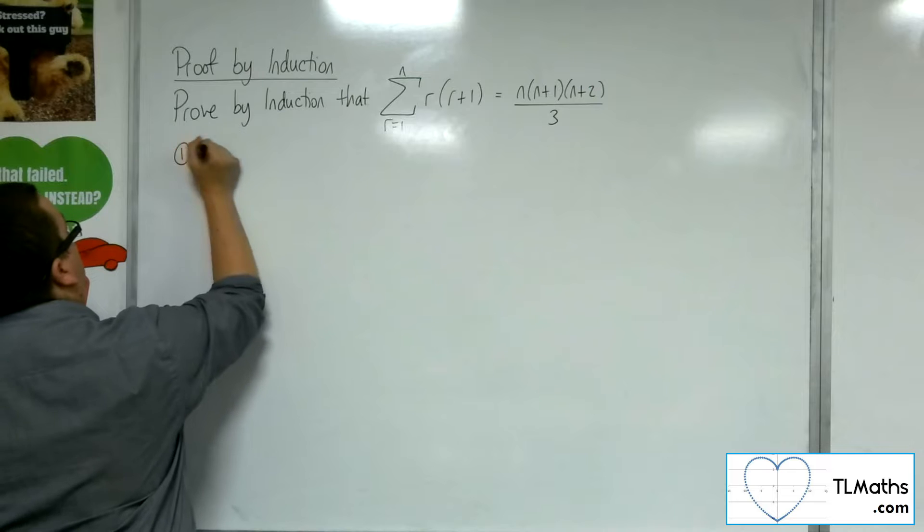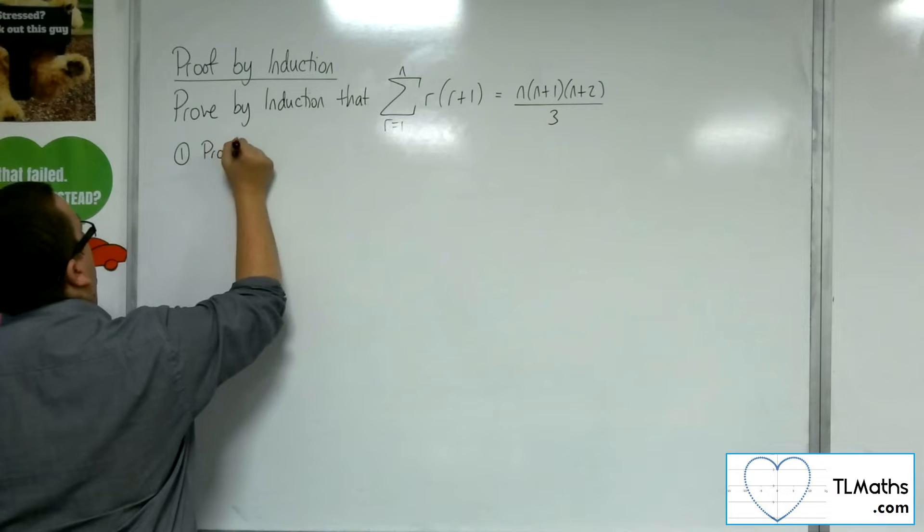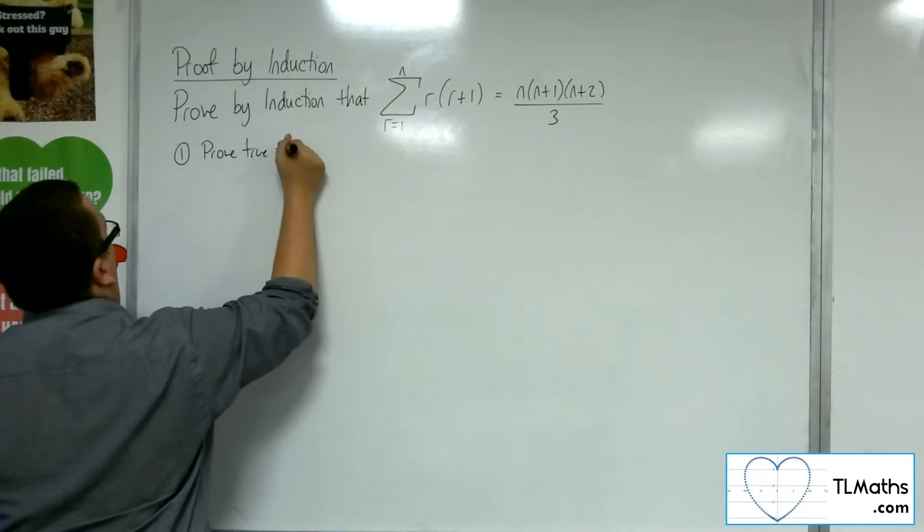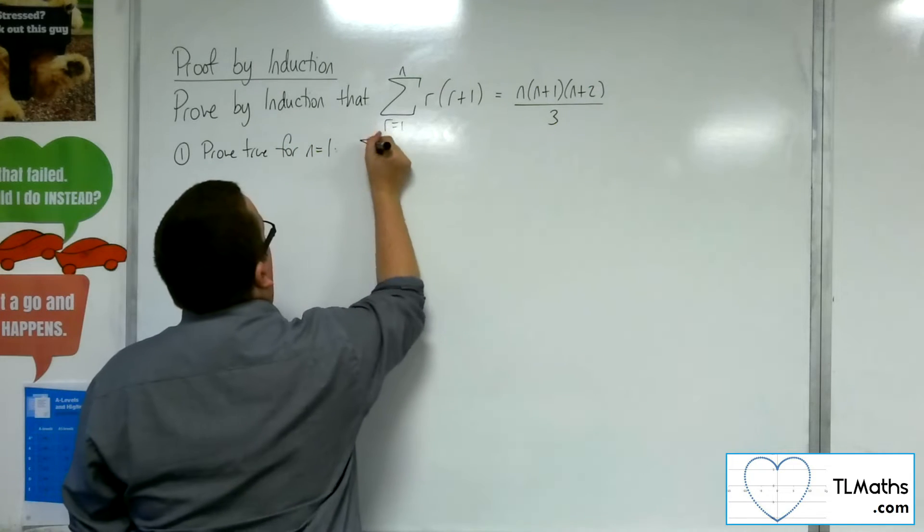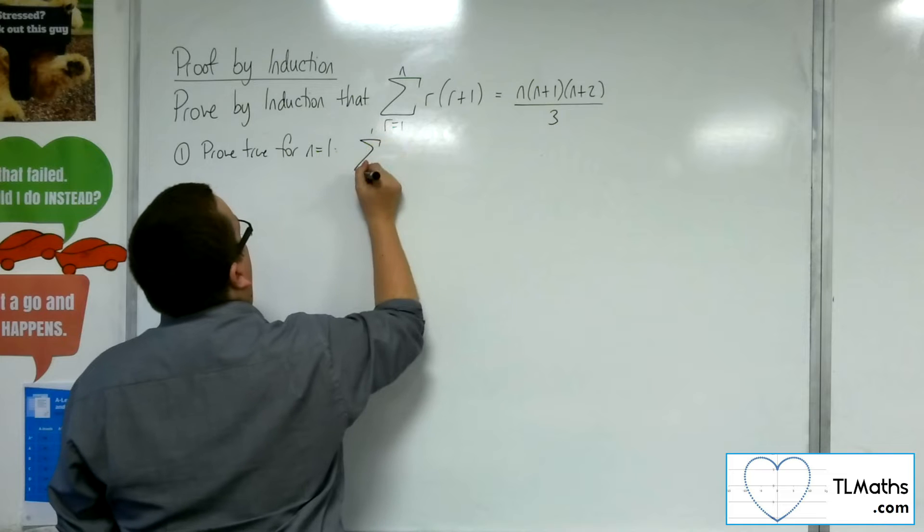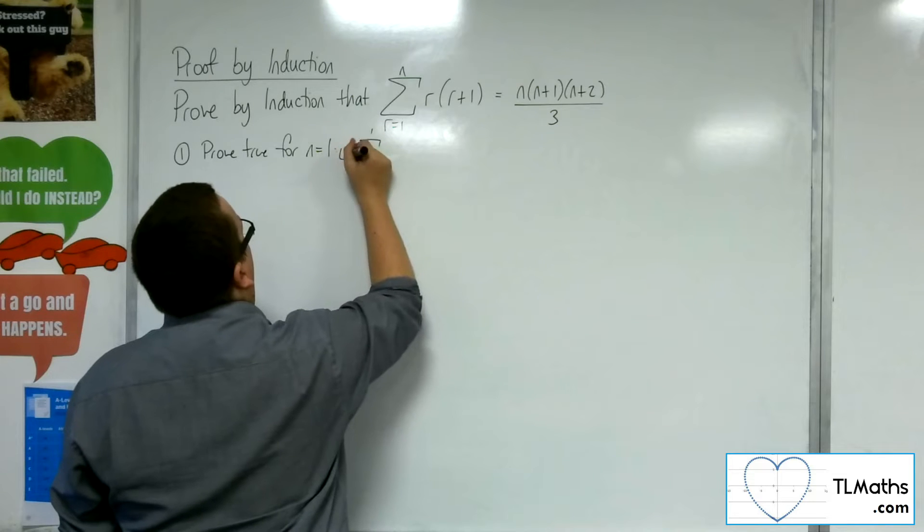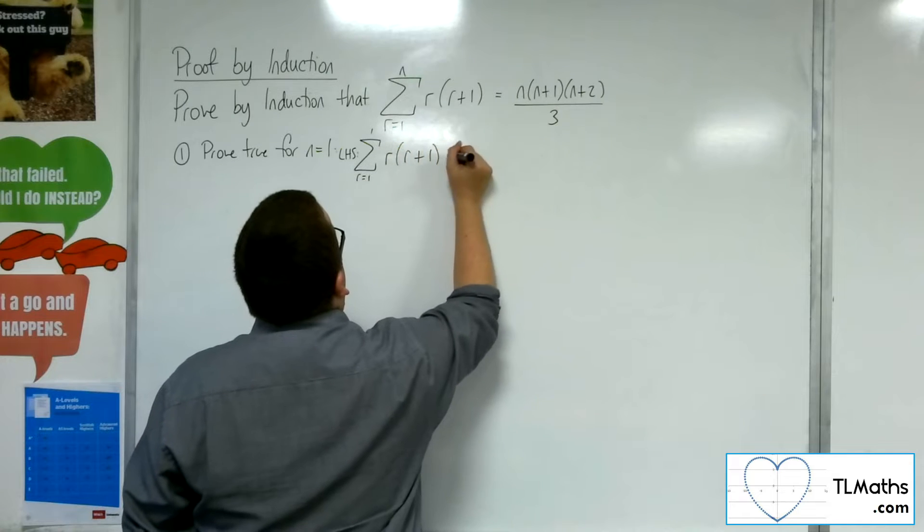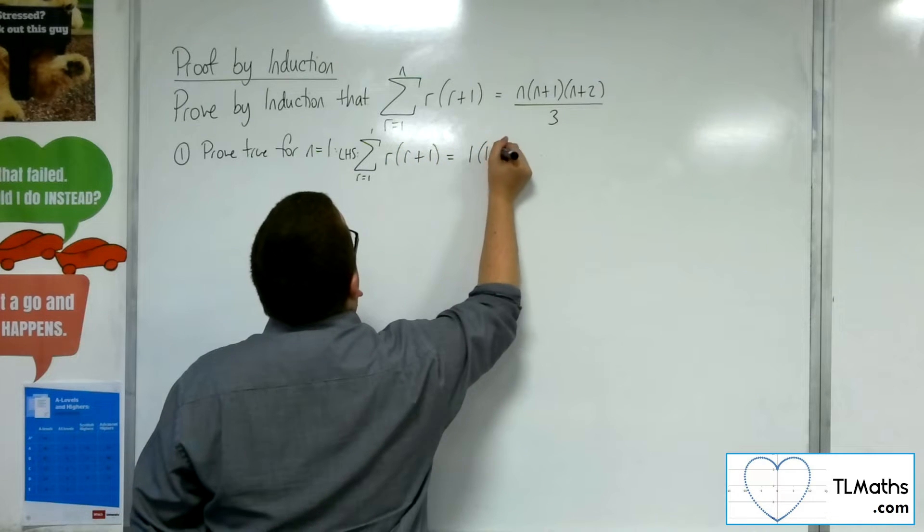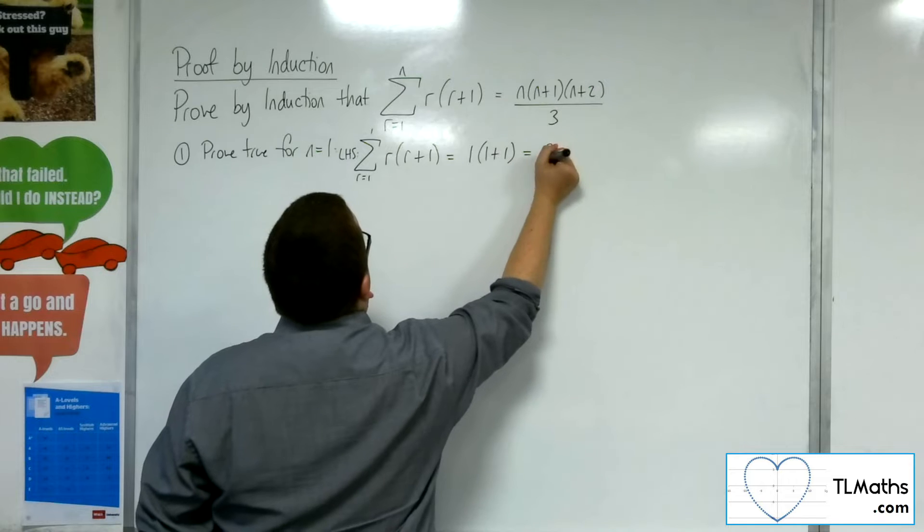So step 1, prove true for n equals 1. So let's substitute in n equals 1 into the left hand side. So the left hand side says that we should have 1 times 1 plus 1, which is 2.